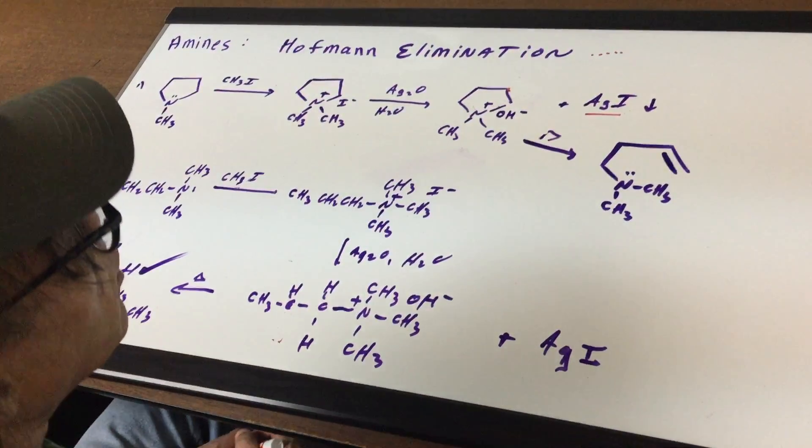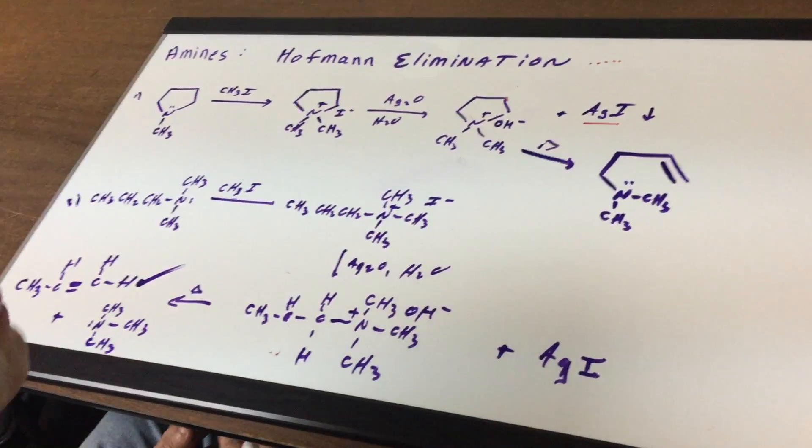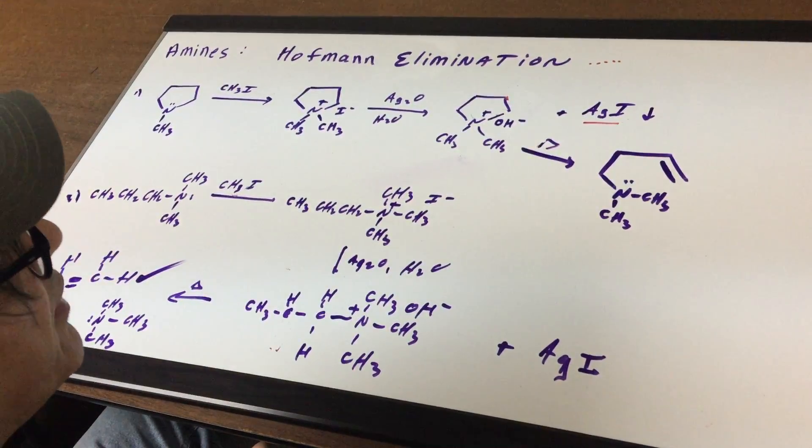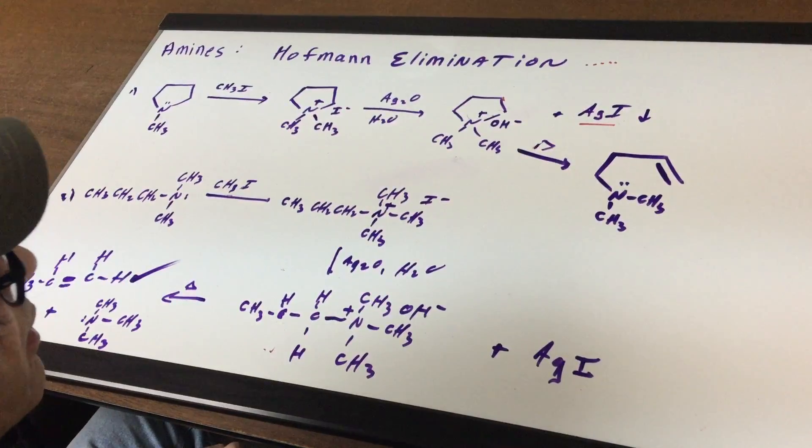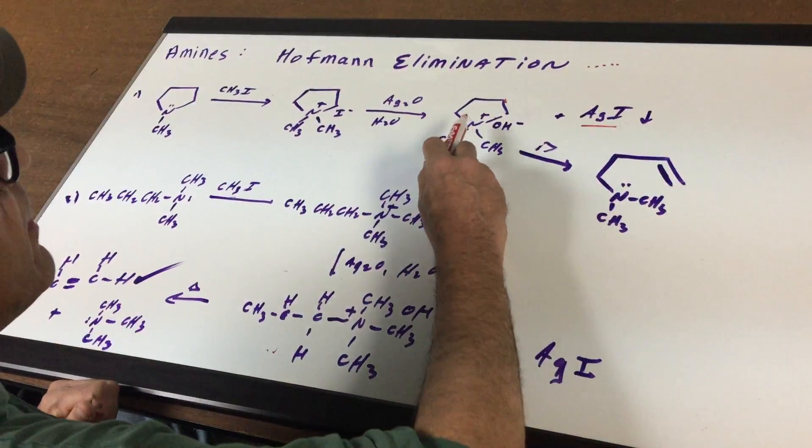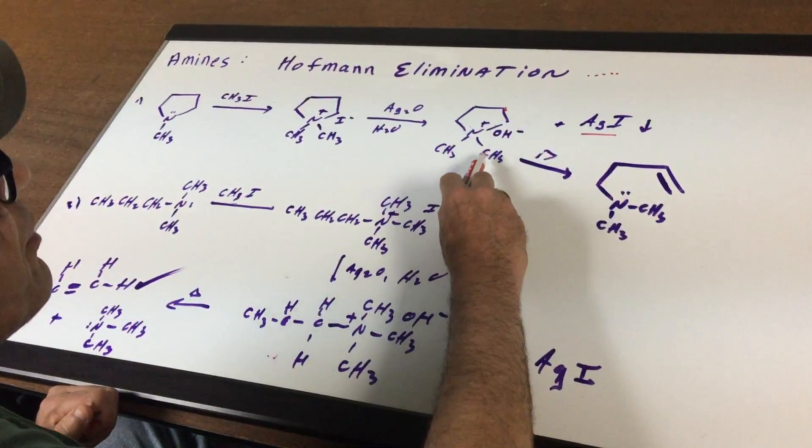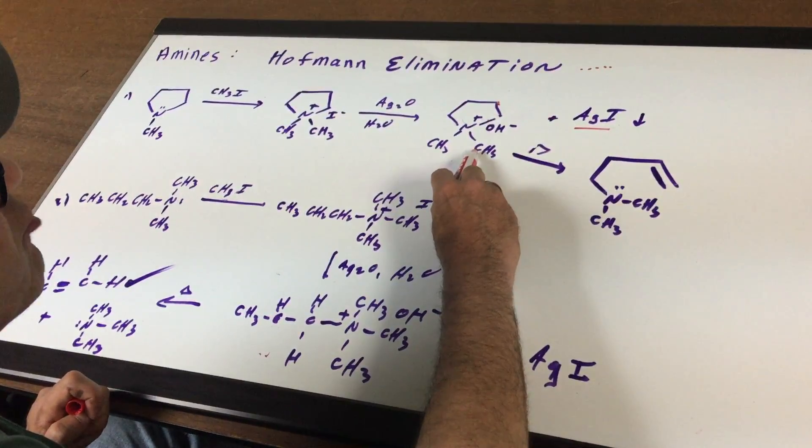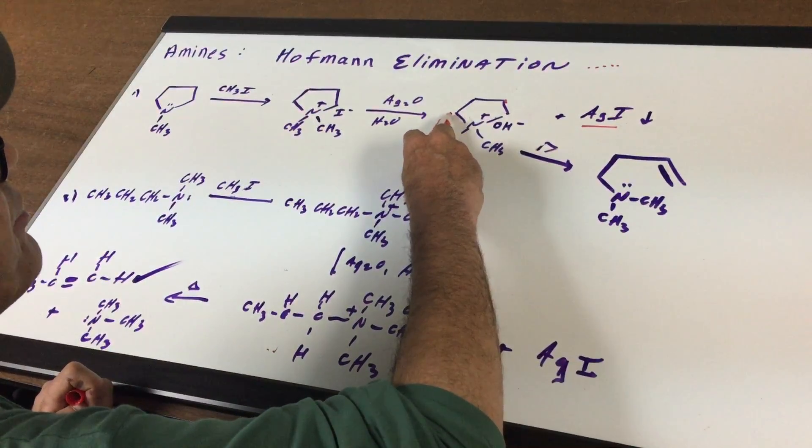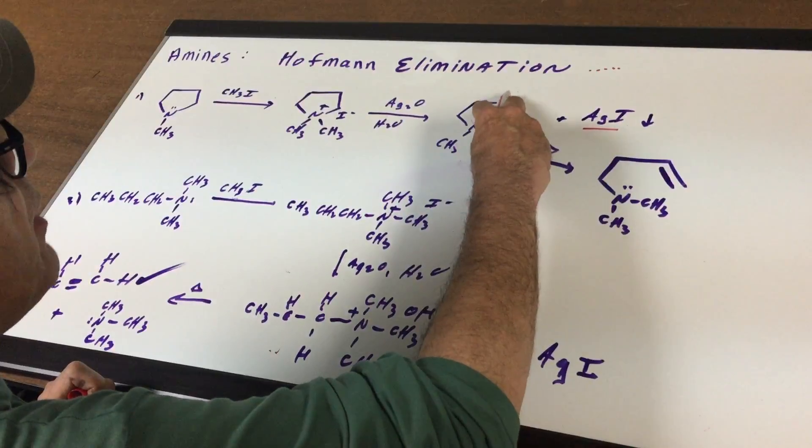Now this here is a quaternary ammonium hydroxide and I'm going to heat it. Now here's the trick. Whenever you heat these quaternary ammonium hydroxides, we're going to remove an H off the beta carbon. That's the trick. The beta carbon. Beta is your boy. Now nitrogen is here. The carbon next to the nitrogen is alpha. So this is an alpha, this is an alpha, this is an alpha, and this is an alpha.